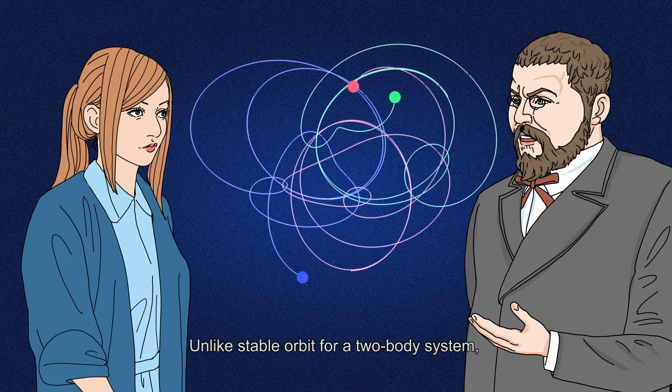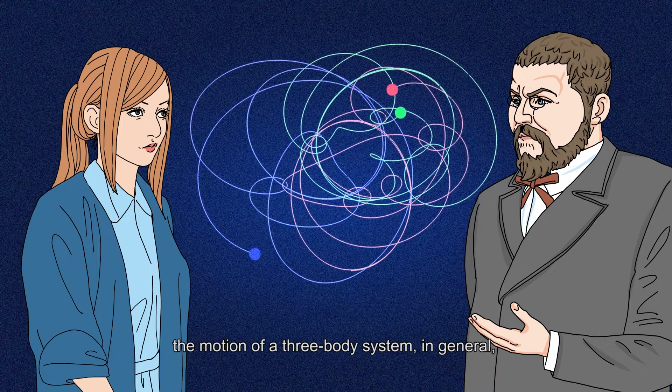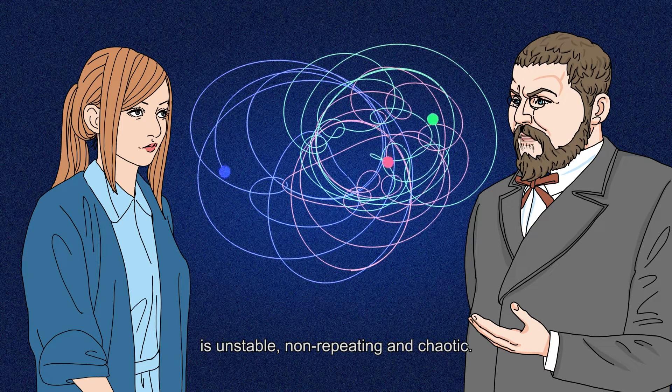Unlike stable orbit for a two-body system, the motion of a three-body system, in general, is unstable, non-repeating, and chaotic.